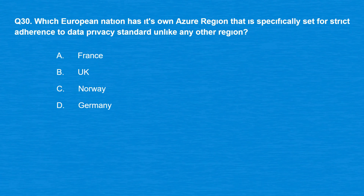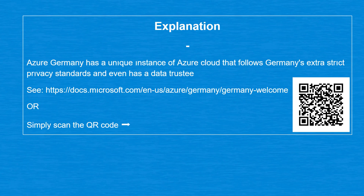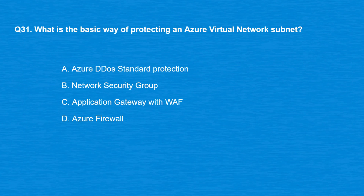Question 30: Which European nation has its own Azure region specifically set for strict adherence to data privacy standards, unlike any other region? Option A: France. Option B: UK. Option C: Norway. Option D: Germany. The correct answer is Option D, Germany. Azure Germany has a unique instance of Azure cloud that follows Germany's extra strict privacy standards and even has a data trustee.